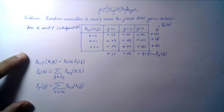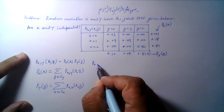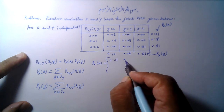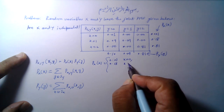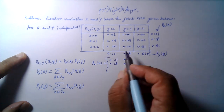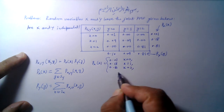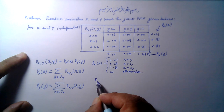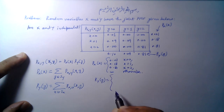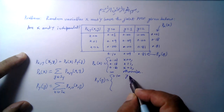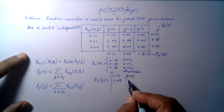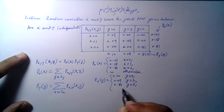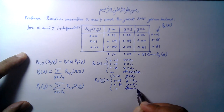We can now write down the marginal PMFs formally. P_X(x) is 0.01 for X equal to 0, 0.18 for X equal to 1, and 0.81 for X equal to 2, and 0 otherwise. The PMF of Y is 0.10 for Y equal to 0, 0.09 for Y equal to 1, and 0.81 for Y equal to 2, and 0 otherwise.